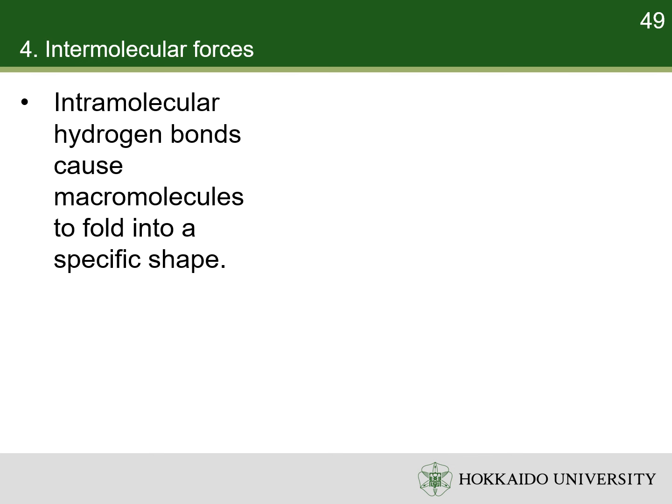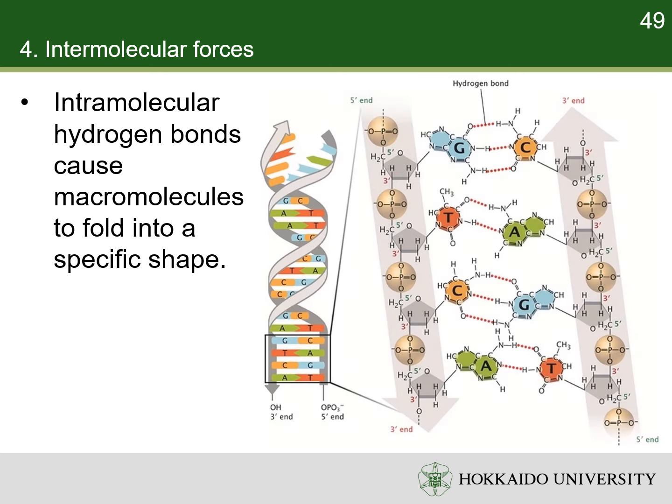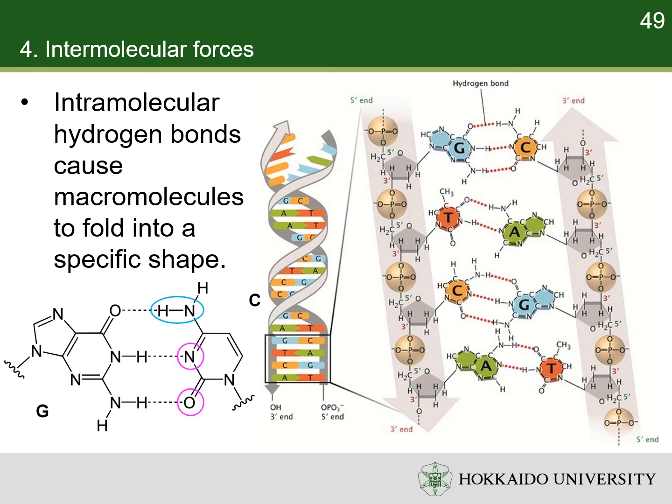Hydrogen bonds can be intramolecular. In macromolecules, hydrogen bonding between parts of the same macromolecule causes it to fold into a specific shape. For example, the double helical structure of DNA is due largely to hydrogen bonding between its base pairs, which link one complementary strand to the other and enable replication. Appropriate geometrical correspondence of proton donors and acceptors allows only the right pairs to form stably. For example, in cytosine, the amino group acts as the proton donor and the carbonyl and one amine as the proton acceptors. Guanine has the carbonyl group that acts as the proton acceptor, while a group at one amine and the amino group act as the proton donors. So, guanine binds to cytosine through three hydrogen bonds.